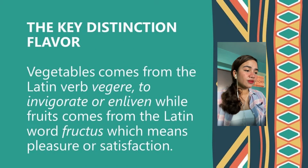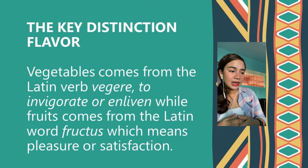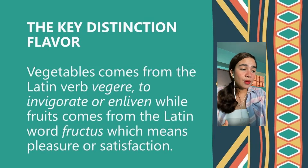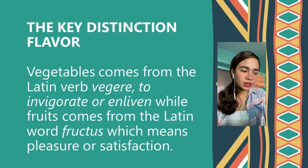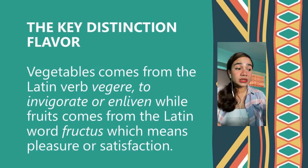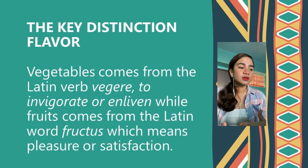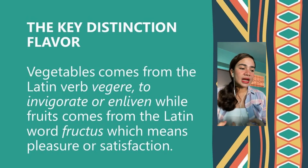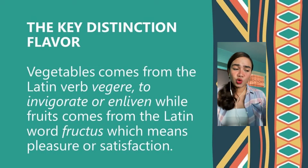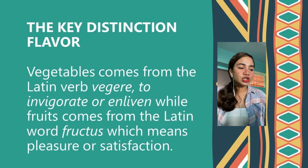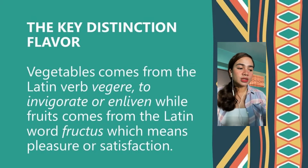The key distinction is flavor. According to Harold McGee, culinary fruits are distinguished from vegetables by one important characteristic: they are among the few things we eat that we are meant to eat. The words fruit and vegetable reflect this difference. Vegetables come from the Latin verb vegere, meaning to invigorate or enlighten. Fruit comes from the Latin fructus, whose meanings include gratification, pleasure, satisfaction, and enjoyment. It is the nature of fruit to taste good, to appeal to our basic biological interest, while vegetables stimulate us to find more subtle and diverse pleasures.